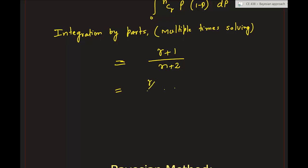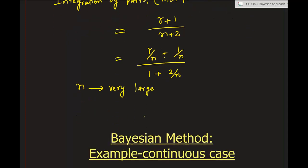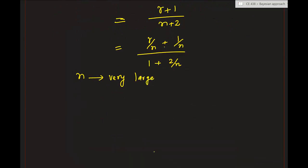Dividing numerator and denominator by n, the expression becomes (r/n + 1/n) / (1 + 2/n). When n is very large — that is, when we inspect a large number of samples — this converges to simply r/n. So for large samples, the expected value of the posterior distribution converges to r/n.